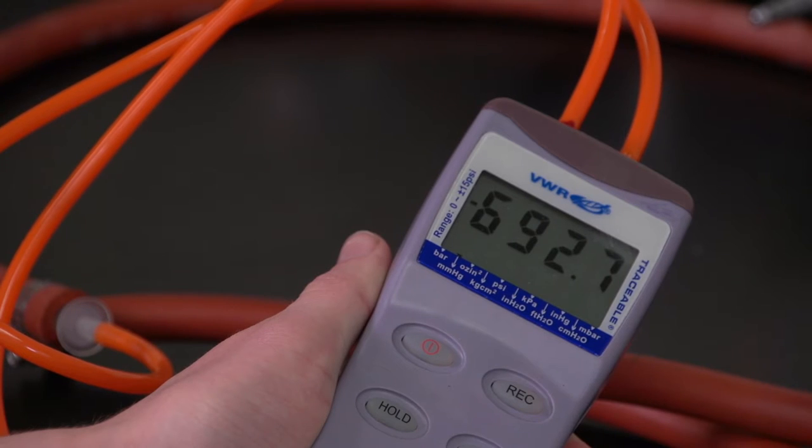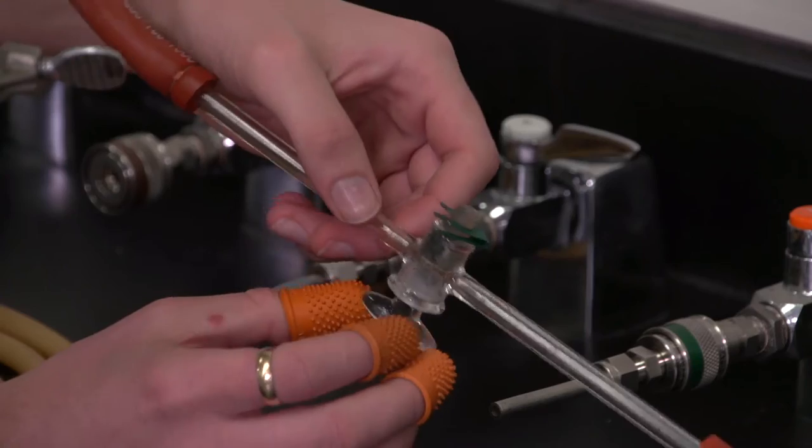When the manometer reading stops increasing, close the stopcock that leads to the vacuum.